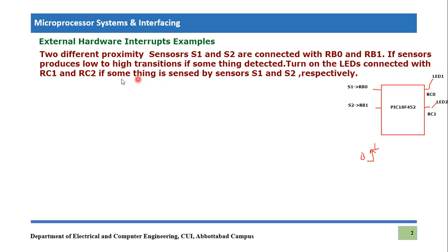When a sensor senses something it produces a low-to-high transition. The task is to turn on LEDs connected with RC1 and RC2. LED1 is attached to RC1 and LED2 is attached to RC2. These two pins are used as output pins. If S1 detects something, LED1 should glow; if S2 detects something, LED2 should glow. We will perform this task using external hardware interrupts.